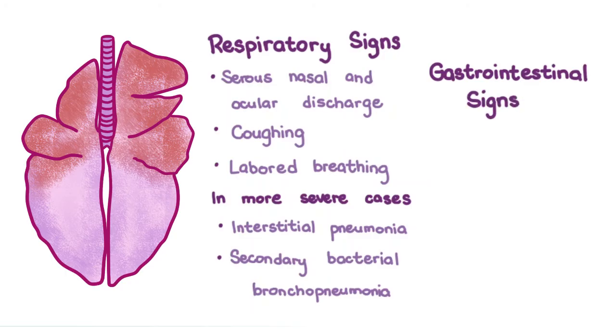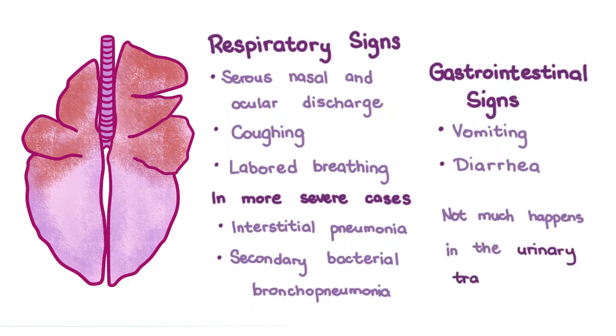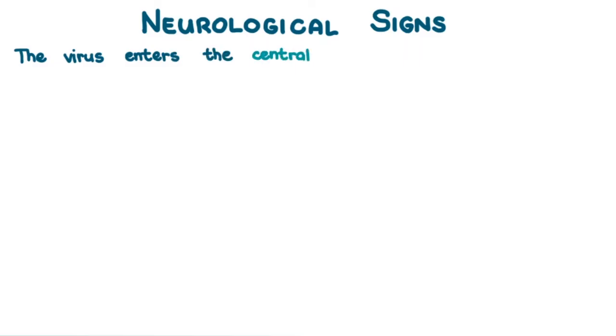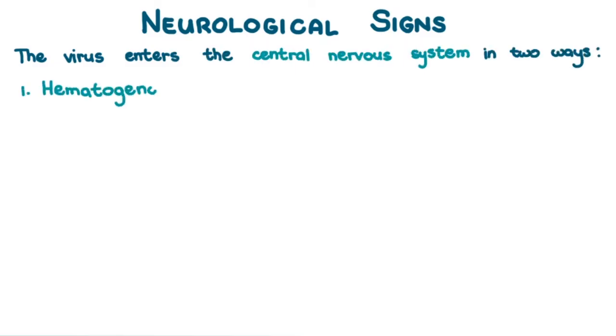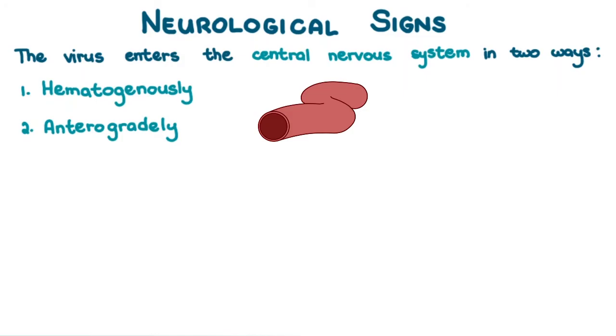Gastrointestinal signs such as vomiting and diarrhea can also occur, and not much happens in the urinary tract. After a few weeks to months, neurological signs of distemper can manifest. The virus enters the central nervous system in two ways: hematogenously through the choroid plexus and blood vessels, and anterogradely via the olfactory nerve.